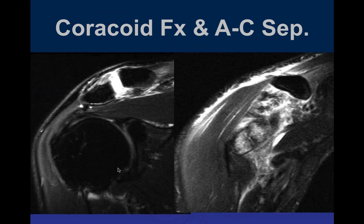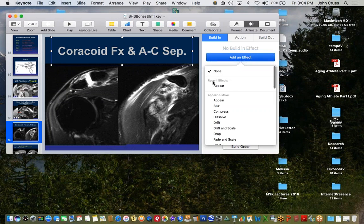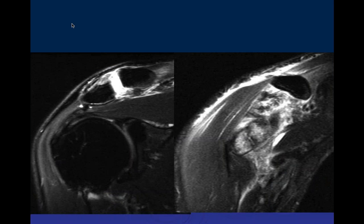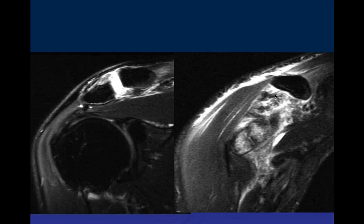On two coronal PD fat-sat images, there's extensive edema at the level of the distal clavicle, widening, and edema extending beyond the capsule. On the more anterior image, there's an ossific body just beneath the skin surface with extensive surrounding edema. This represents a coracoid fracture with AC separation.